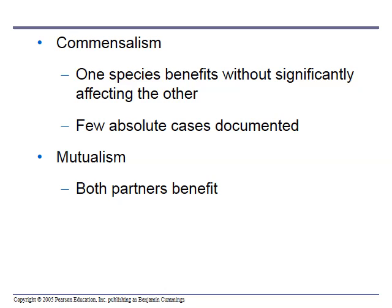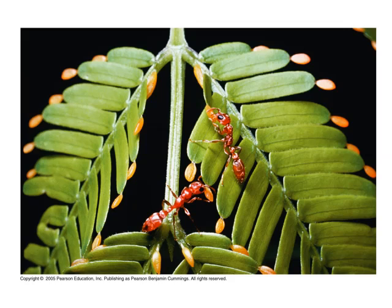Commensalism is when one species benefits without significantly affecting the other. One possible example is when cattle graze, they stir up insects and birds go eat the insects — probably with no effect on the cattle whatsoever. Another type is mutualism, where both partners benefit. In this case, the plant supplies the ants with sugary structures on the leaves, and the ants will farm and take care of the plant in return.